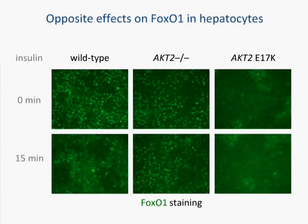Now we can do the interesting experiment of asking whether or not this is a gain-of-function mutation. Normally in wild-type hepatocytes stimulated with insulin, you would see FOXO1 — this key transcriptional regulator of insulin signaling — be removed from the nucleus to the cytosol relatively rapidly after insulin stimulation. And that's exactly what we see: at the zero time point there's a large accumulation of FOXO1 in the nucleus, and after 15 minutes of insulin signaling most of that has been redistributed to the cytosol. In the knockout cell lines, which are unable to respond to insulin, you see that even after insulin stimulation almost all of the FOXO1 is still resident in the nucleus. In contrast, the AKT2 E17K mutation, even without any insulin signaling, has the vast majority of FOXO1 found in the cytosol, indicating that this is likely a gain-of-function mutation.